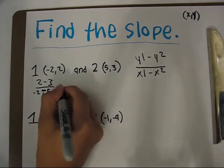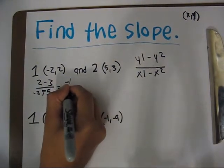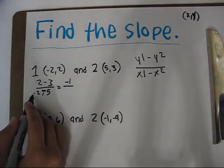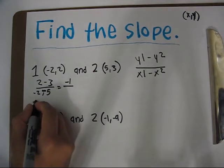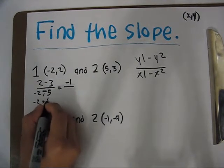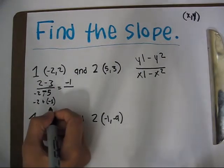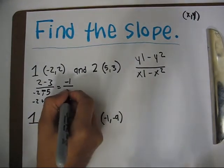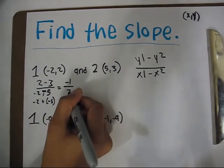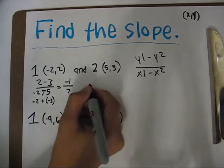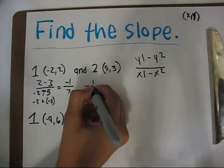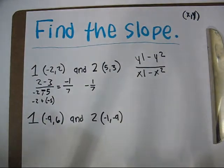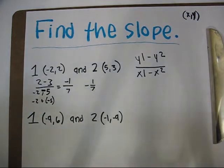So like that. So 2 minus 3, negative 1 over negative 2 minus 5. You can also do negative 2 plus negative 5, which is 7. This is written negative 1 sevenths. So the slope of this is negative 1 sevenths.